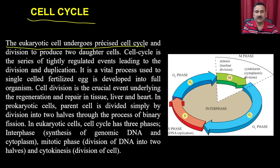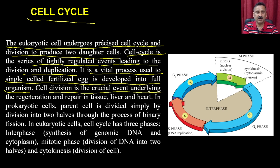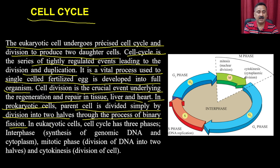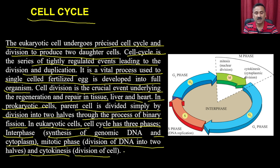The eukaryotic cell undergoes a precise cell cycle and division to produce two daughter cells. The cell cycle is a series of tightly regulated events leading to division and duplication. In eukaryotic cells, the cell cycle has three important phases: interphase, the mitotic phase, and cytokinesis. In the interphase, genomic content and cytoplasm are synthesized; in the mitotic phase, DNA is divided into two halves; and cytokinesis divides the cell.